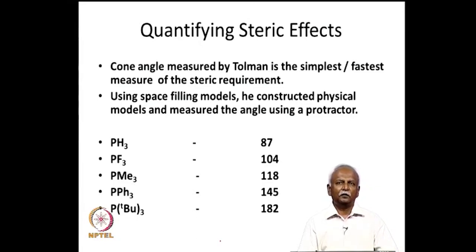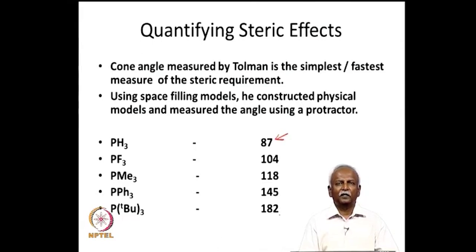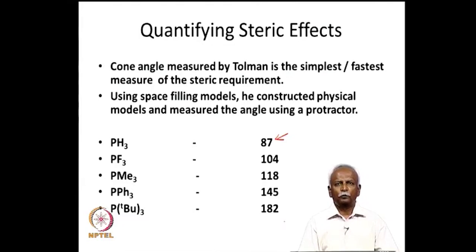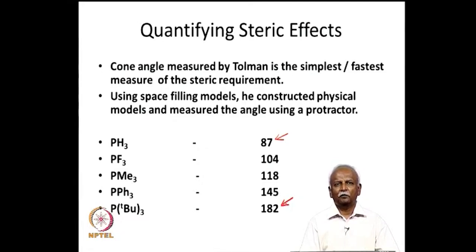It is obvious that PH₃, which has three hydrogens on the phosphorus, has the smallest cone angle, and it is indeed the smallest in the list. As you increase the bulk of the R group, the angle subtended at the metal becomes larger and larger. The largest is 182° for tri-tert-butylphosphine.